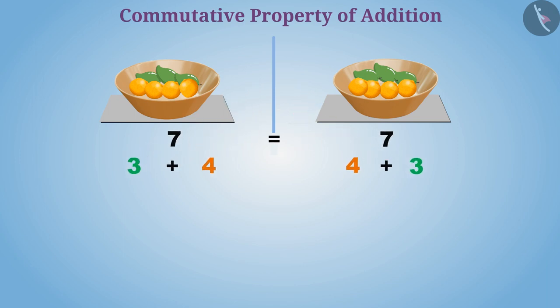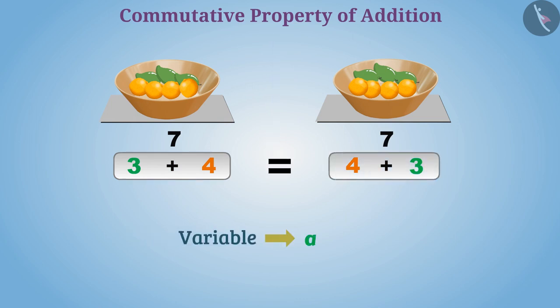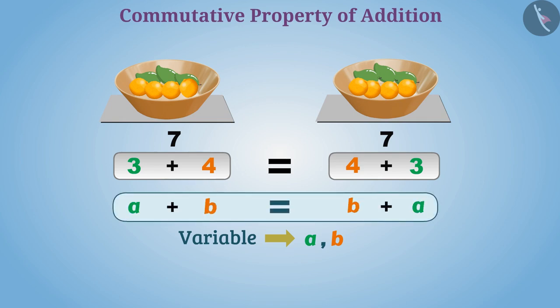Commutative property of addition tells us that we can add numbers in any order. 3 plus 4 is equal to 4 plus 3. Using variables a and b, we can express commutative property of addition of any two numbers as a plus b is equal to b plus a. In this way, variables are used to express commutative property of addition in general way.